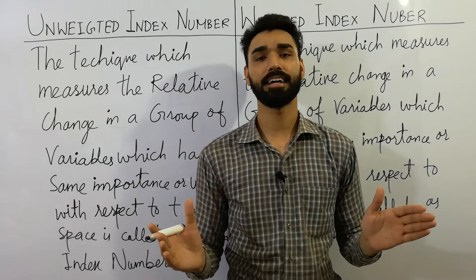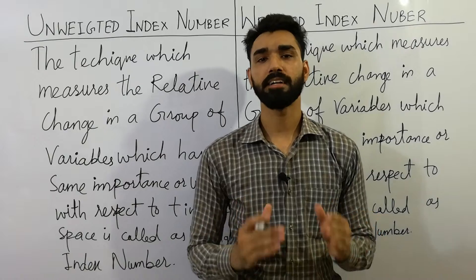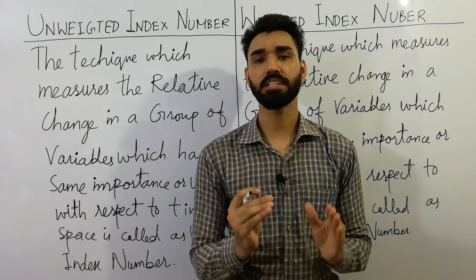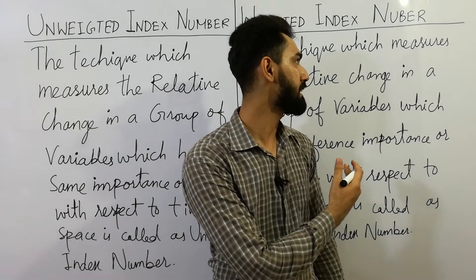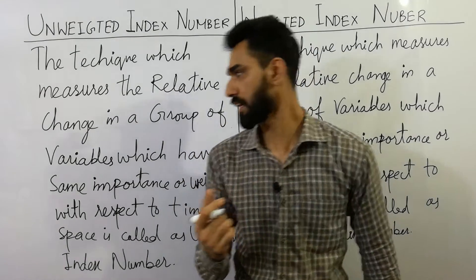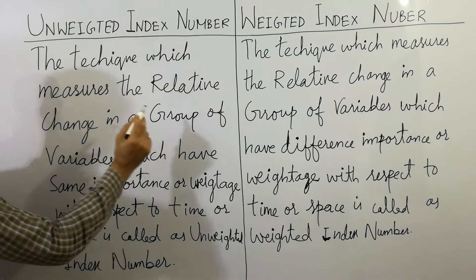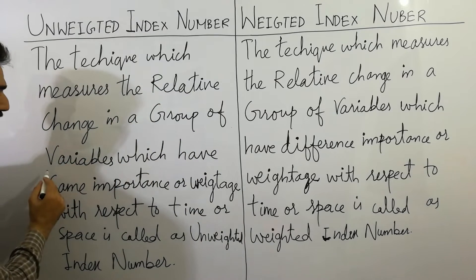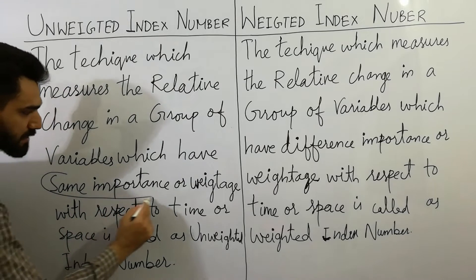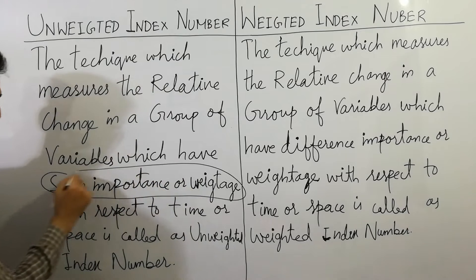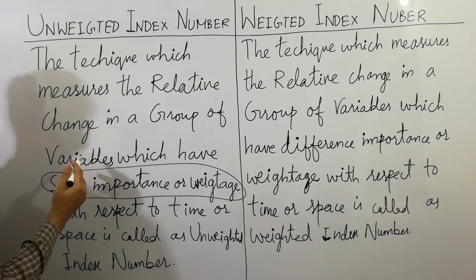Today I am here to simply explain the difference between unweighted index number and weighted index number. The technique which measures the relative change in a group of variables which have the same importance or weightage with respect to time or space is called an unweighted index number.